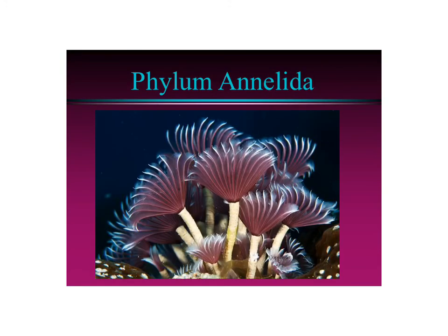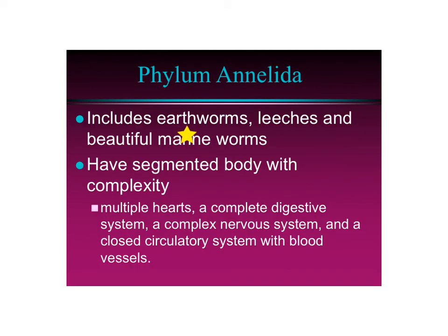The last animal group for this lesson is phylum annelida, or annelids. These include earthworms, leeches, and beautiful marine worms. They all have segmented bodies — each segment is specialized — and they're starting to have more and more specialized tissues. They have multiple hearts; if you look in an earthworm, you'll see many hearts. They have a complete digestive system with a mouth and an anus, so food goes straight through. They have a complex nervous system — little brains — and a circulatory system with blood vessels. You think an earthworm is simple, but there's really a lot going on.